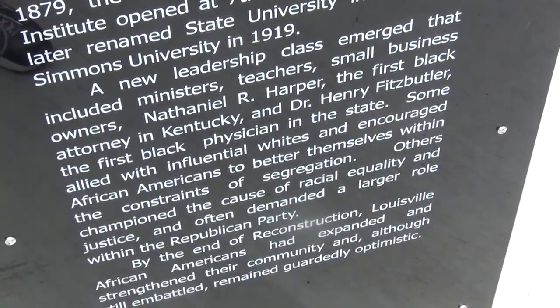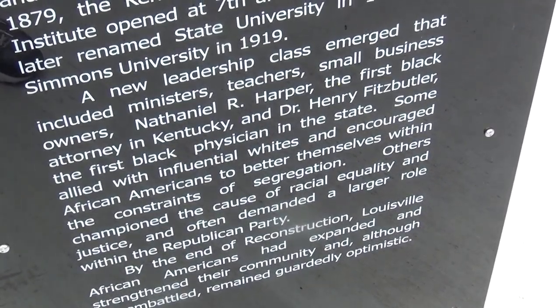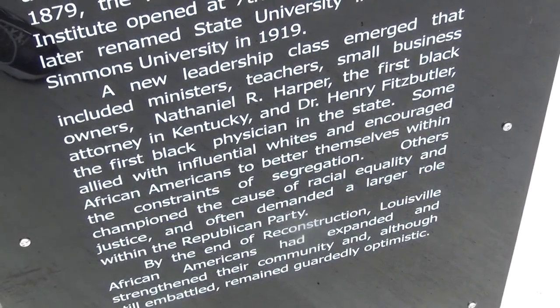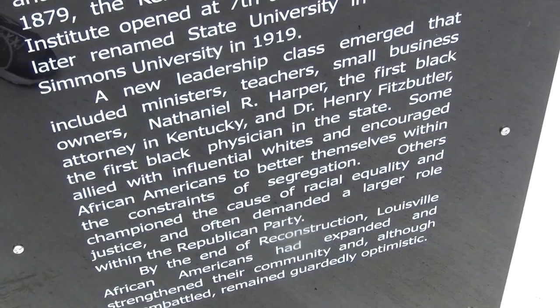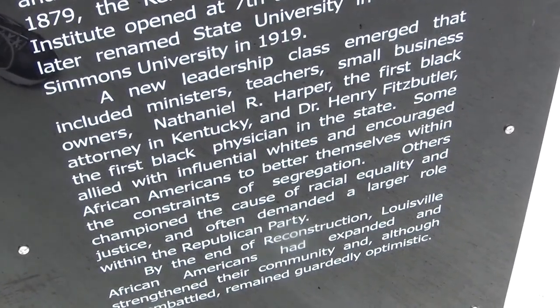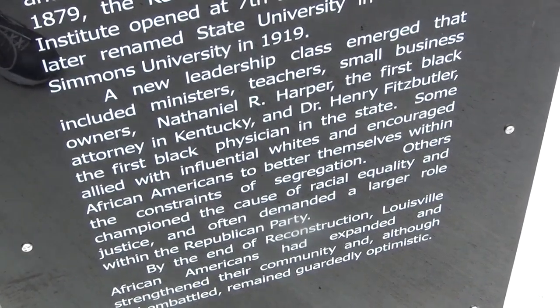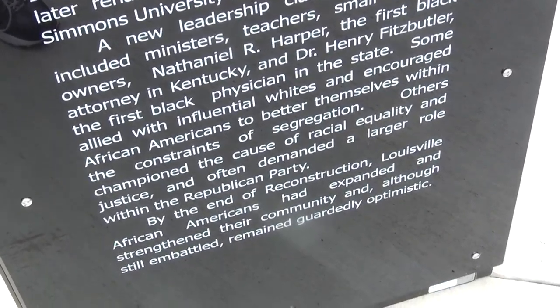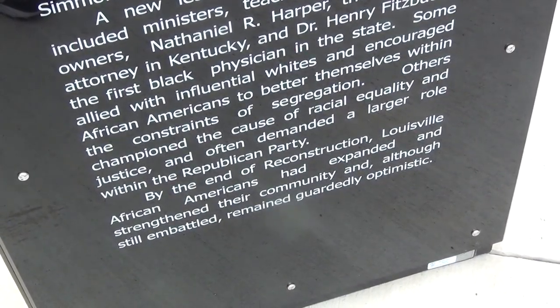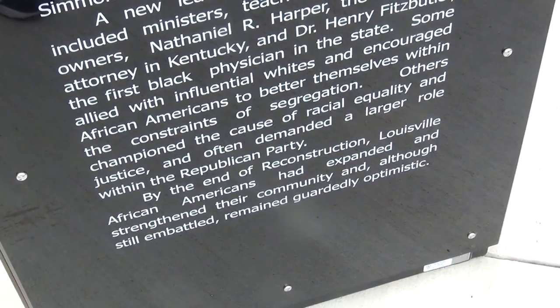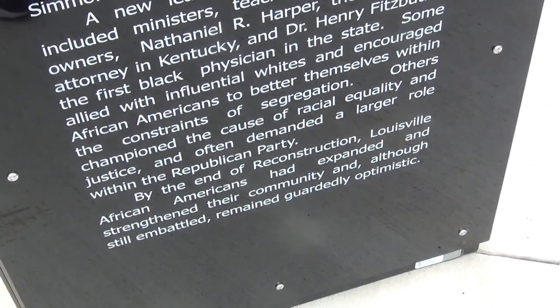A new leadership class emerged that included ministers, teachers, small business owners, Nathaniel R. Harper — the first black attorney in Kentucky — and Dr. Henry Fitz Butler, the first black physician in the state. Some allied with influential whites and encouraged African Americans to better themselves within the constraints of segregation. Others championed the cause of racial equality and justice and often demanded a larger role within the Republican Party. By the end of Reconstruction, Louisville African Americans had expanded and strengthened their community, and though still embattled, remained guardedly optimistic.